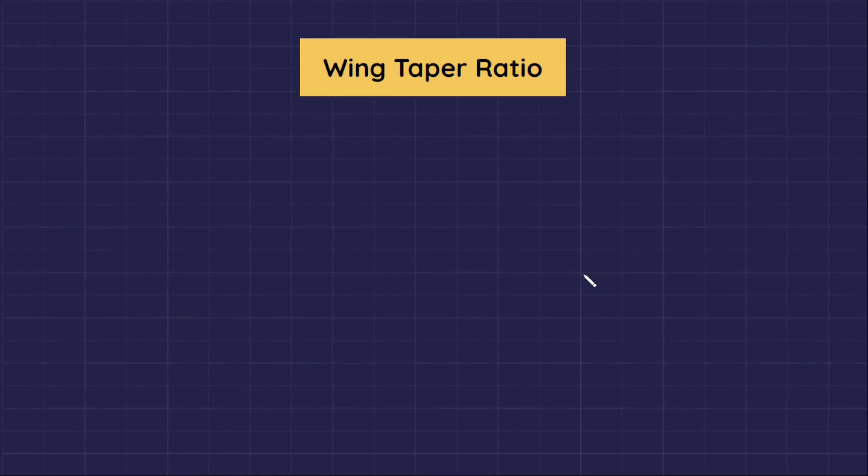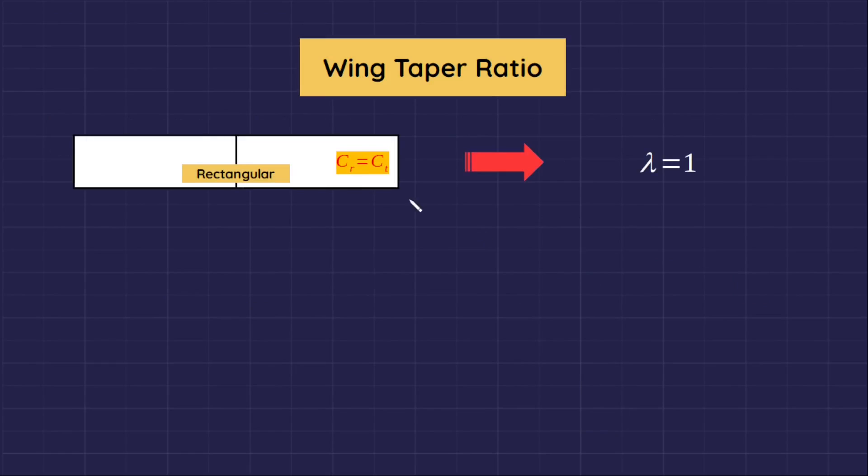For a rectangular wing, when the wing tip cord is equal to wing root cord, then taper ratio is equal to 1.